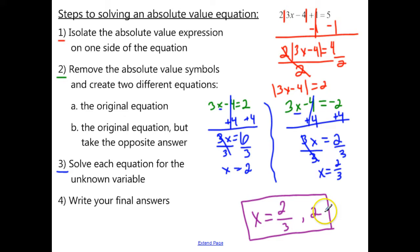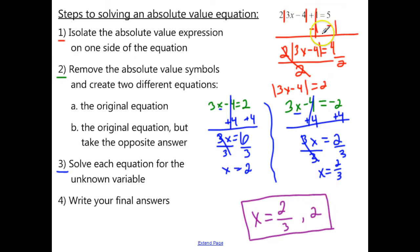If I wanted to check my answers, I would take x equals 2 thirds and substitute that back into the original equation — when I simplify the left side, I should get 5 as an answer. If I take positive 2 and substitute it in for x and simplify, I should also get 5. So these are my two answers in solving this absolute value equation.